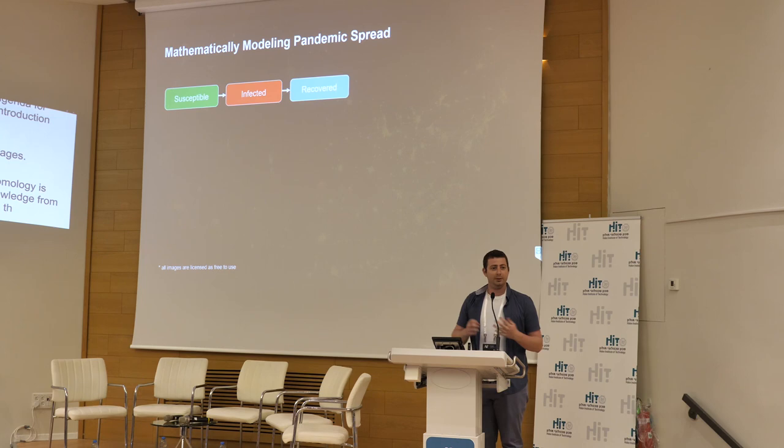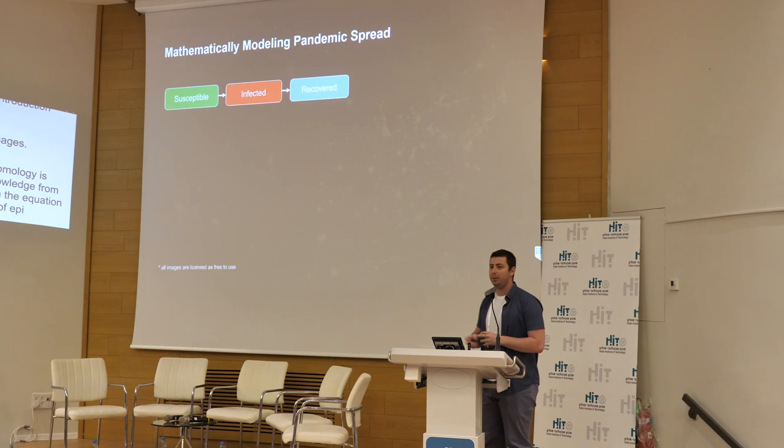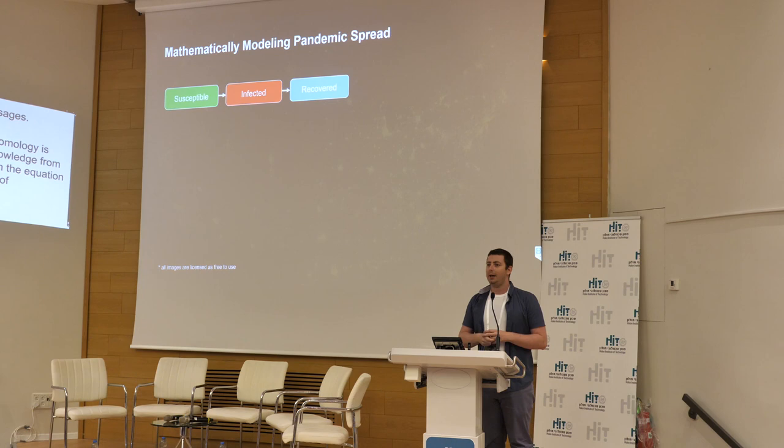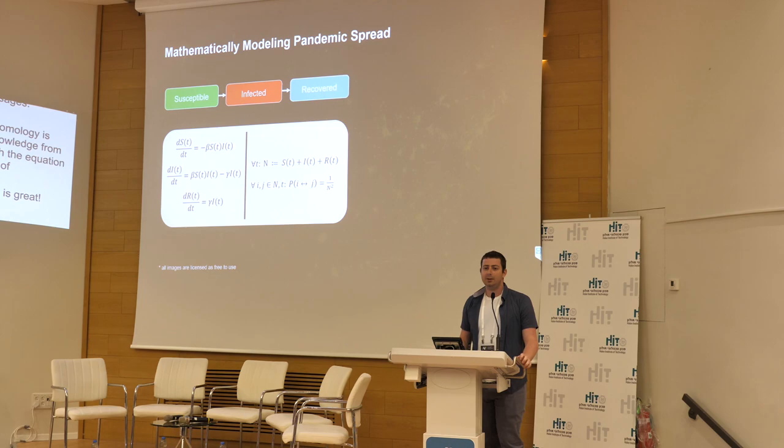Let's start with the model that everybody knows and hates: the SIR model. It assumes really simple dynamics — three types of epidemiological or clinical states: people that can be infected, people that are currently infected, and people that have recovered from infection. Notice nobody dies in my model, which is great; we don't want people to die. But it's not really realistic.